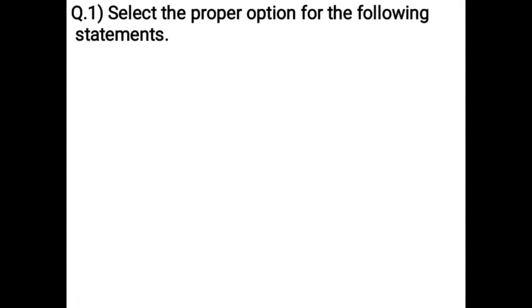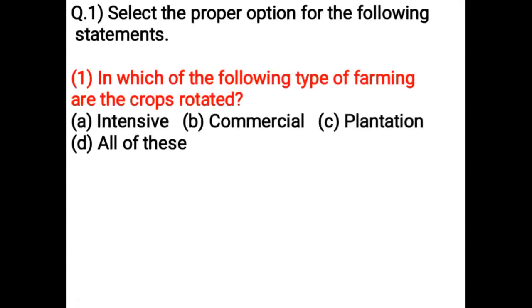Select the proper option for the following statement: In which of the following types of farming are the crops rotated? Option A: Intensive, Option B: Commercial, Option C: Plantation, Option D: All of these. Correct answer is Option A: Intensive.